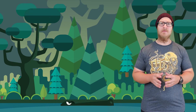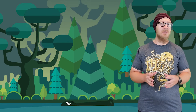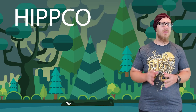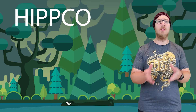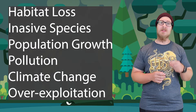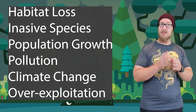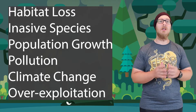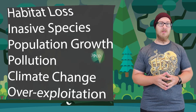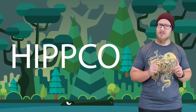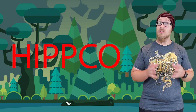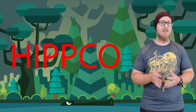Human impacts on biodiversity are represented by the acronym HIPCO, which describes the primary factors leading to a loss of biodiversity: habitat loss, invasive species, population growth, pollution, climate change, and overexploitation. These letters will remain on screen, turning red when discussing concerns related to each factor.